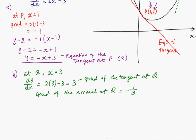So finding equation of a straight line, y minus y1, the y-coordinate of Q is 4, equals to the gradient multiplied by x minus x1. x1 is 3.